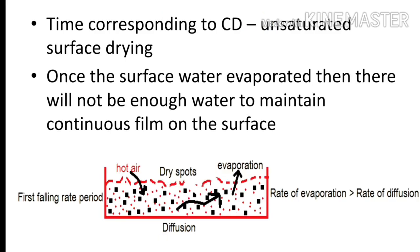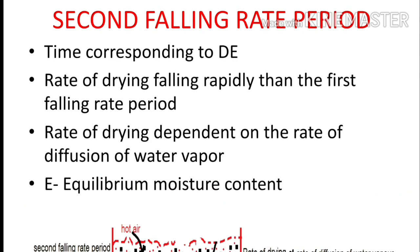The time corresponding to CD is known as the first falling rate period. Here, unsaturated surface drying occurs. Water from the surface of the solid is evaporated, and water from the inner side diffuses out, but there is only a little amount of water inside the solid — not enough to maintain a continuous film on the surface. An unsaturated layer forms on the surface, and after drying, dry spots appear on the surface. During this period, the rate of drying begins to fall. Point D, the second critical point, marks the end of the first falling rate period, when the unsaturated film is completely evaporated.